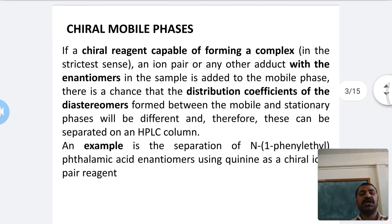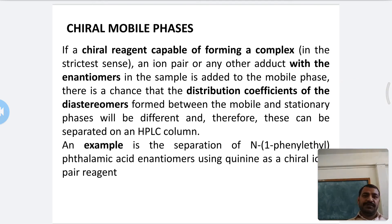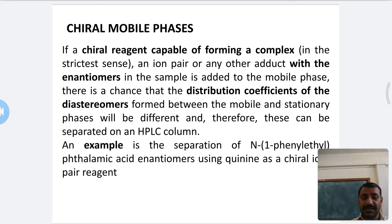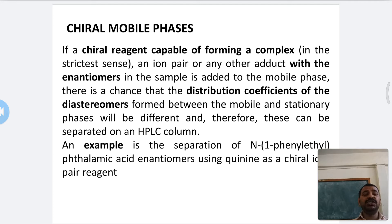For the first condition — using a chiral mobile phase — separation takes place in the column. The chiral mobile phase is used with a non-chiral stationary phase. The chiral reagent forms a complex with the enantiomers, converting them to diastereomers, which increases the distribution coefficient and makes them easier to separate.